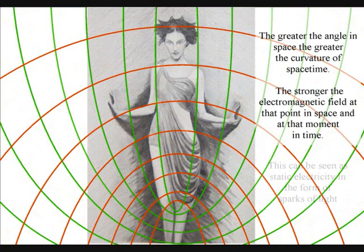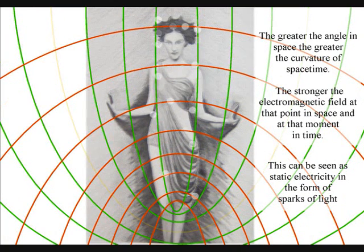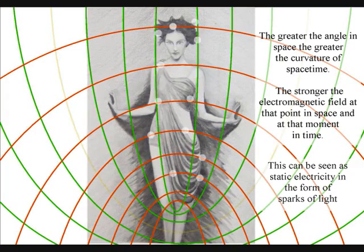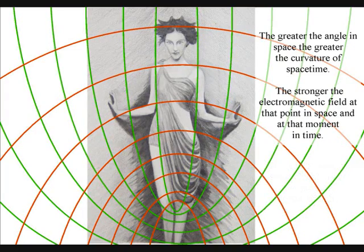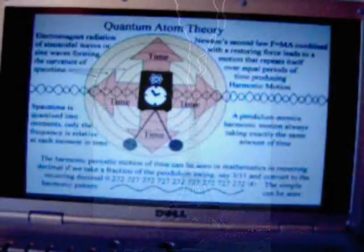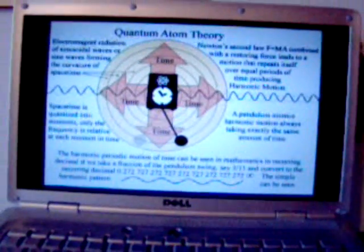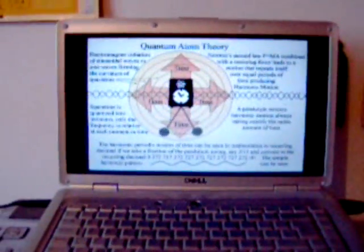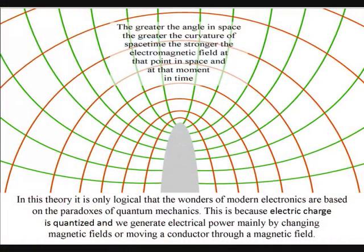This can be seen as sparks of light associated with static electricity. The atoms will even distort the geometry of spacetime, creating electrostatic discharge in the form of lightning. In this theory it is only logical that the wonders of modern electronics are based on the paradoxes of quantum mechanics.